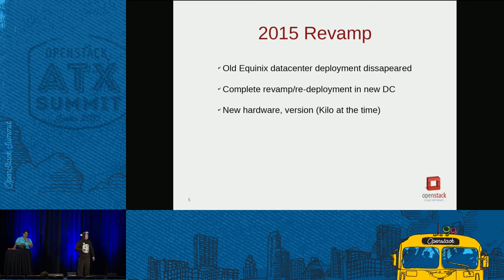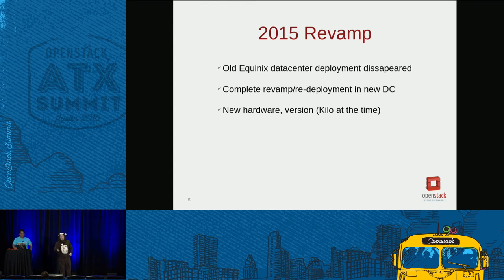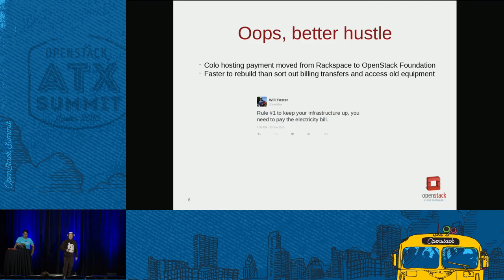In 2015 we had a major revamp. TryStack was originally in an Equinix data center on the west coast, and mysteriously the entire environment disappeared one day. We first thought it was a network issue — we dove into internet weather reports, started pinging colleagues in the facility, and found no issues there. After a litany of phone calls, it turns out the ownership of the colo was being transferred from Rackspace to the OpenStack Foundation and the electricity bill didn't get paid.